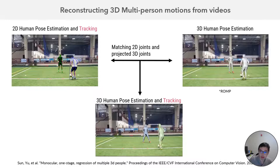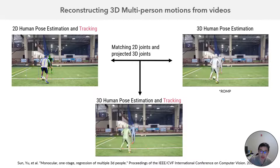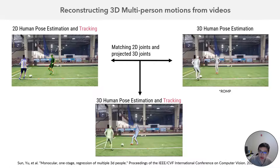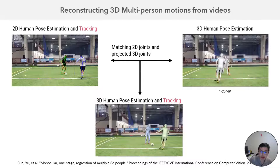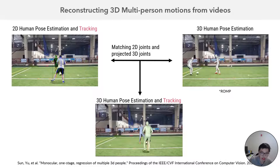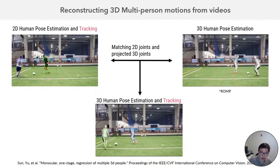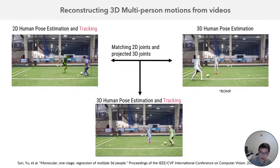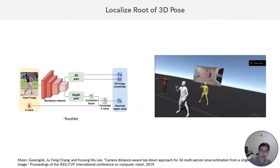On the top left, you can see the 2D pose estimation and tracking result — it's really easy to track each person in the video in 2D. On the top right, we extract the 3D human pose. We compute the 3D joints in the 3D human pose and project them back to the image plane, then find the closest match between the two sets of joints to associate each person to their 3D human pose. As you can see in the result on the bottom, the 3D human pose is associated to a specific person represented by different colors — green and blue — and even when people are passing by each other, you can still associate to the right person.